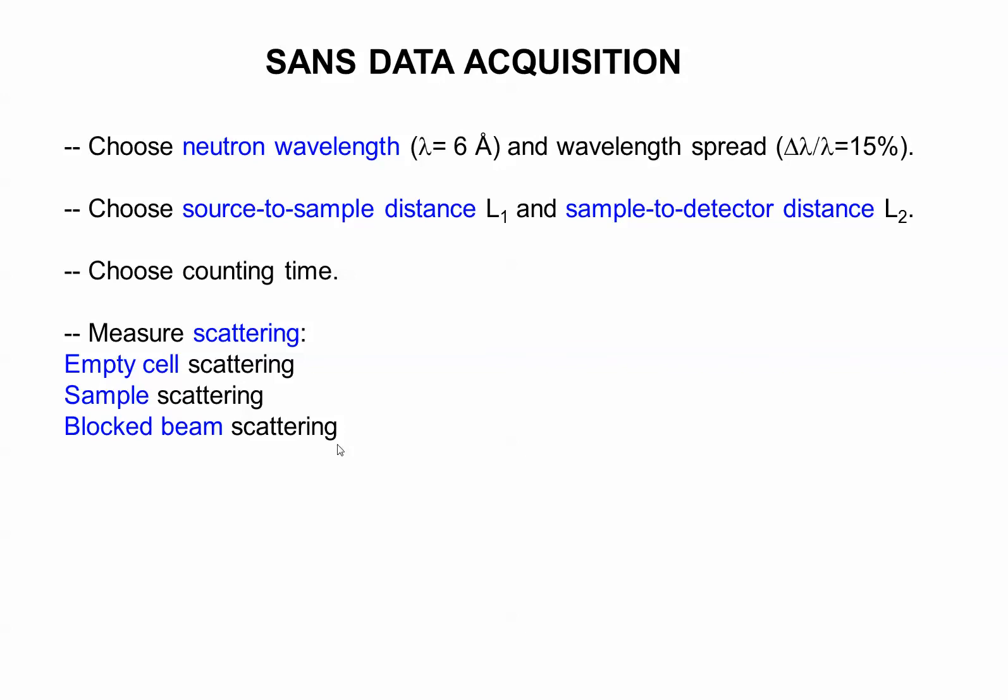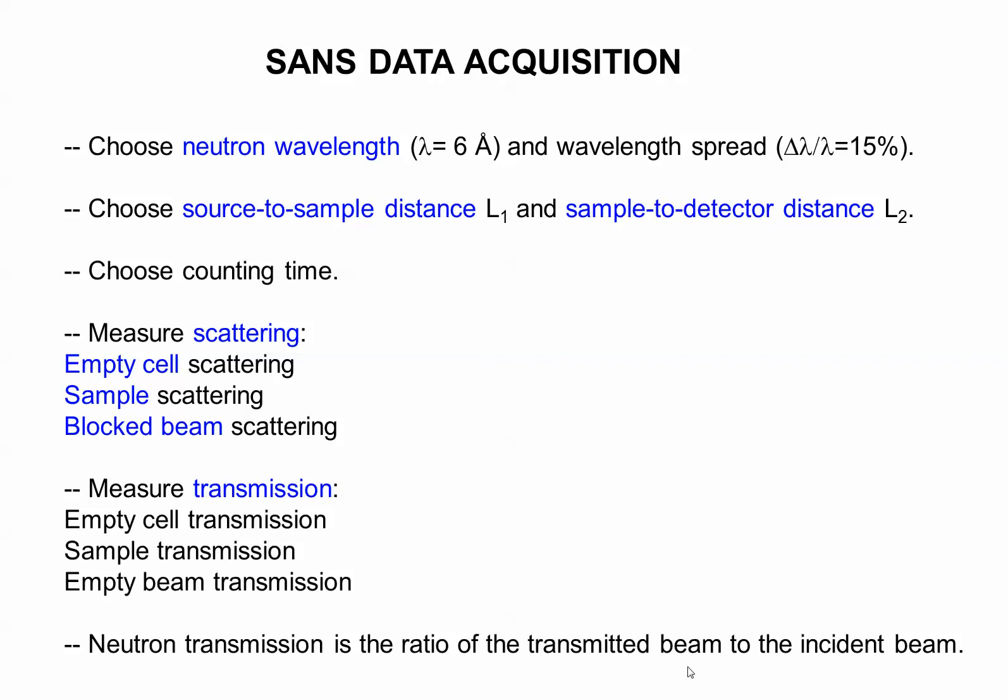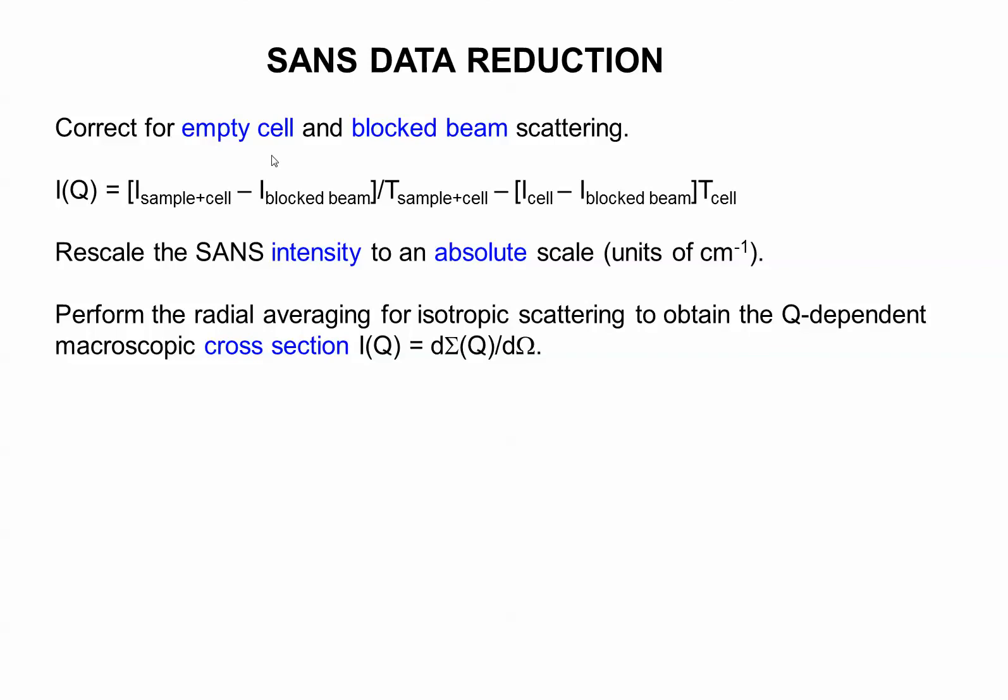We have to measure empty cell, sample itself, and blocked beam. We have to measure transmission. Transmission for the empty cell, for the sample, and then also the empty beam transmission. Neutron transmission is the ratio of the transmitted beam to the incident beam. All of this will become obvious when you get beam time. You come here and we help you with data acquisition.